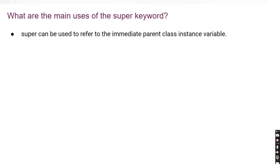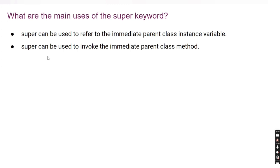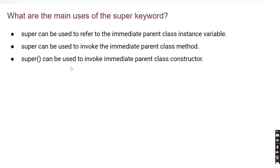Super can be used to refer to the immediate parent class instance variable. Another use is super can be used to invoke the immediate parent class method inside the child class. The third use is super can be used to invoke the immediate parent class constructor. So super is basically used to invoke the instance variable, class method, or constructor of a parent class.